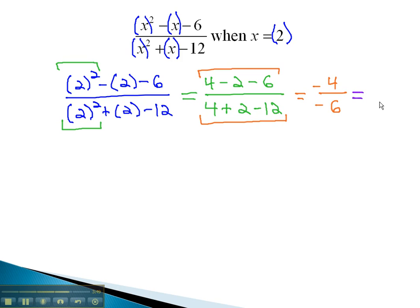Finally, negative 4 over negative 6 reduces to positive 2 thirds. This rational expression simplifies to 2 thirds when the x is equal to 2.